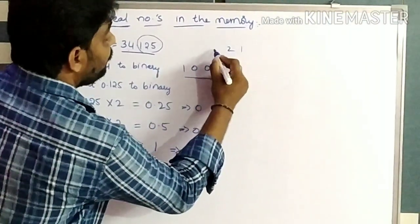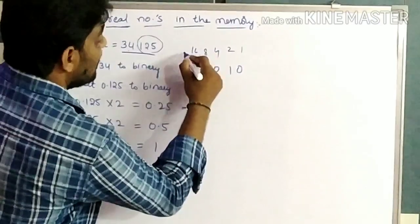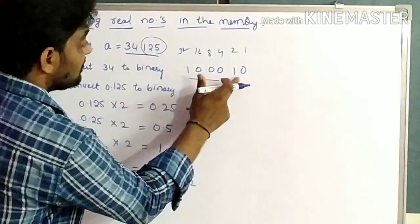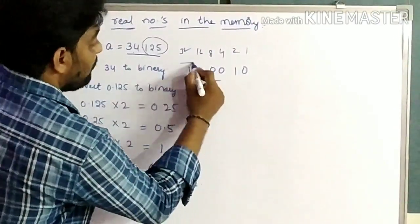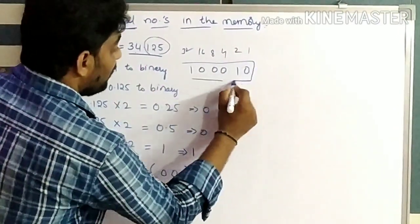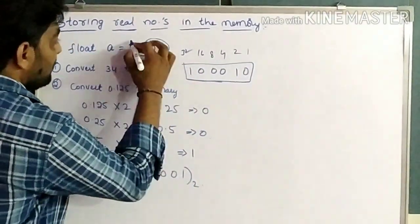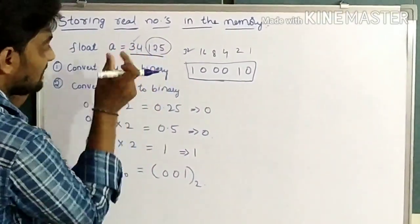For powers of 2: 1, 2, 4, 8, 16, 32. 32 plus 1 is 34. This is the binary value for 34 — 100010 — and the first conversion is done.